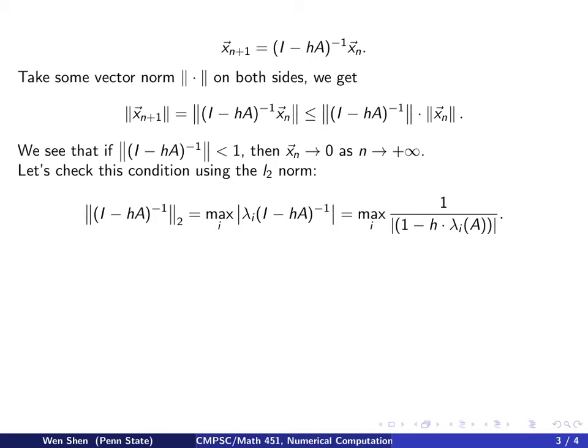So the L2 norm of this matrix here becomes the maximum value over the eigenvalues of this matrix in absolute value. And the eigenvalue of this matrix equals to, because it's inverse and a polynomial expression, so it's exactly the polynomial expression of the eigenvalue of A going in there. That's from your course on matrices.